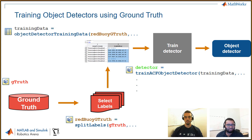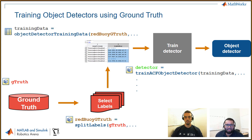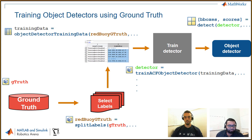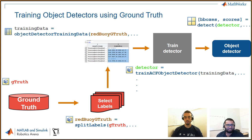MATLAB provides a function to help you do that — it's the objectDetectorTrainingData function. It takes in the new ground truth object that has data from only one particular label and creates a table with sampled images from that video file as well as bounding box locations of the object in the image. The next step is to use a function called trainACFObjectDetector. The ACF is an aggregate channel features object detector — a particular kind of machine learning detector. We have similar functions for CNNs, fast RCNN, and faster RCNN as well. Finally, you use the detect function to actually use a detector to identify things in an image or a video stream. The workflow stays the same but you can try different detectors and figure out how well each performs.